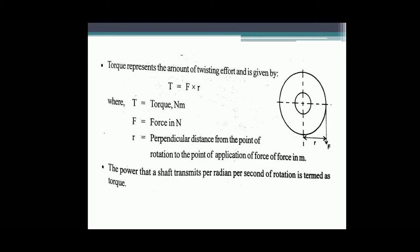Coming to the definition of torque: torque represents the amount of twisting effort and is given by T = F × R, where F is force in Newtons and R is the perpendicular distance from the point of rotation to the point of application of force in meters. The power that a shaft transmits per radian per second of rotation is also termed as torque.